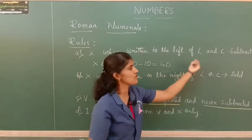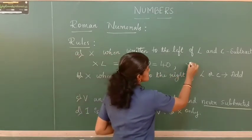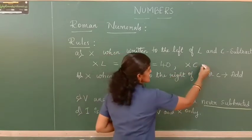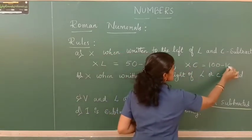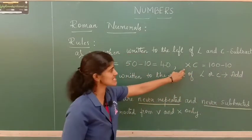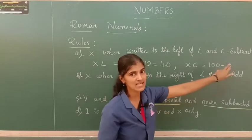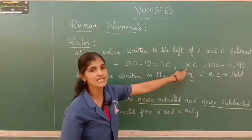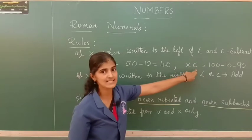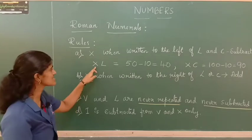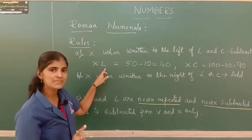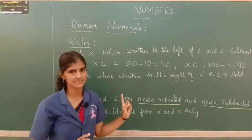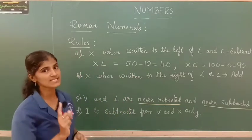For 90, represented as XC: C is the symbol for 100, and X is to the left of C, so it is 100 minus 10 which gives us 90. So 90 is represented as XC and 40 is represented as XL. Remember: X can be subtracted only from L and C.